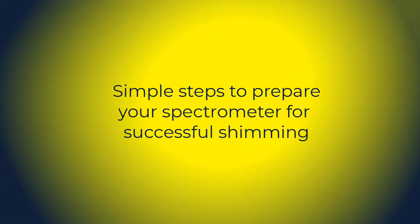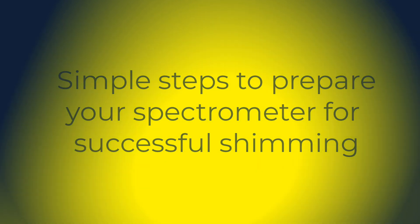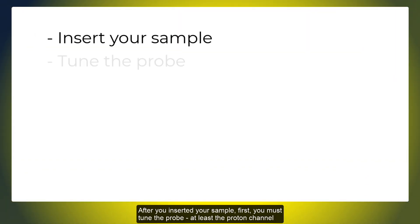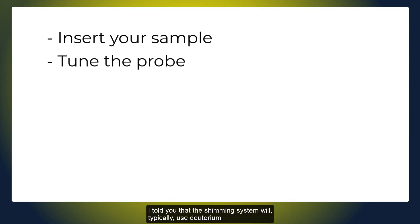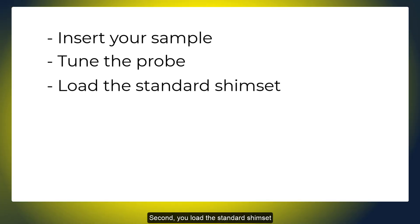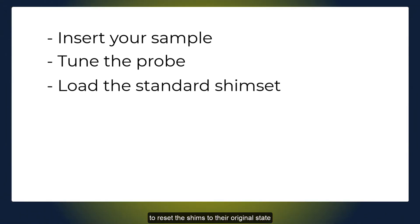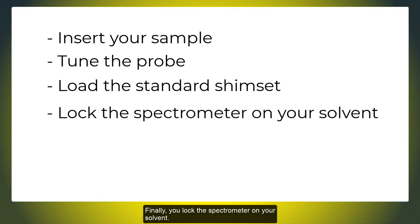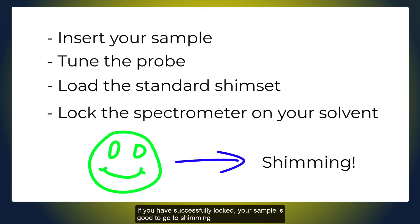Here are simple steps to prepare your spectrometer for successful shimming. After you inserted your sample, first, you must tune the probe, at least the proton channel. I told you that the shimming system will typically use deuterium, but it will also need a proton in proton-rich solvents. Second, you load the standard shimset to reset the shims to their original state. Finally, you lock the spectrometer on your solvent. If you have successfully locked, your sample is good to go to shimming.